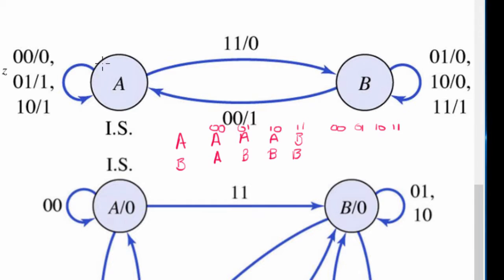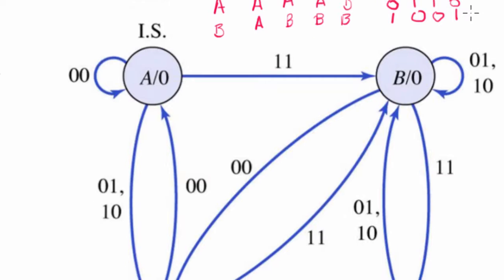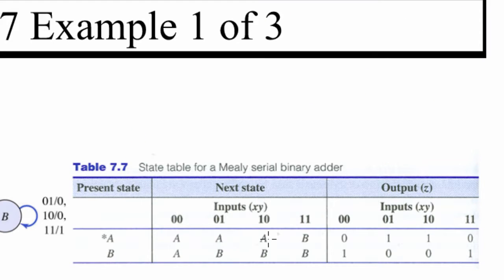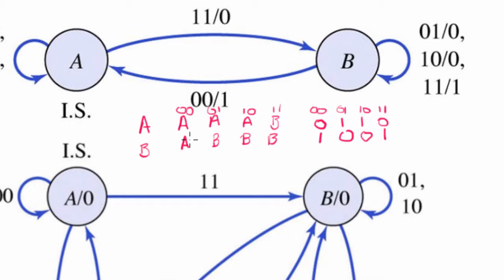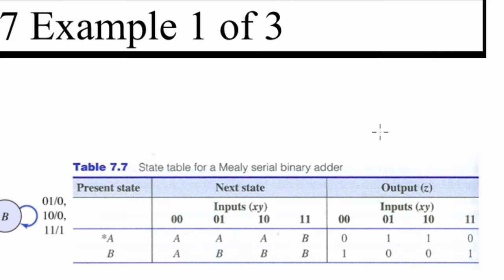For Mealy outputs: at A with 0,0 output is 0; at A with 0,1 output is 1; at A with 1,0 output is 1; at A with 1,1 output is 0. At B with 0,0 output is 1; at B with 0,1 output is 0; at B with 1,0 output is 0; at B with 1,1 output is 1. The state tables are reflections of each other — yes. This is our complete state table for the Mealy circuit.